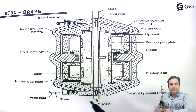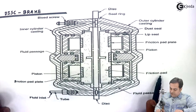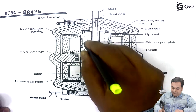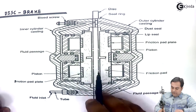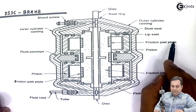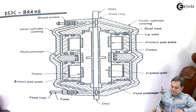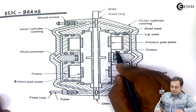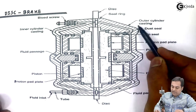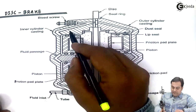Now first of all let us see how many parts are there in the disc brake to understand the construction. As we can see here, we are having the friction pad which is in the form of grains shown here. After friction pad, here we have the friction pad plate which is provided to strengthen the friction surface. Then we are having a piston here.